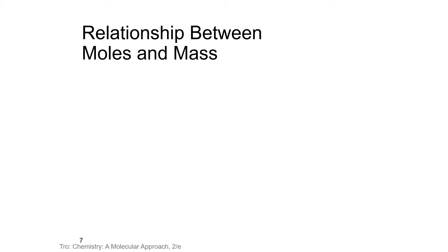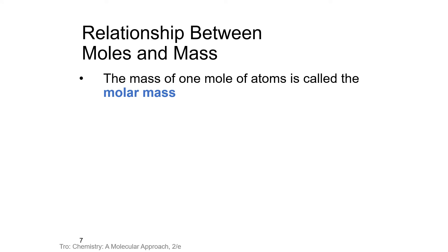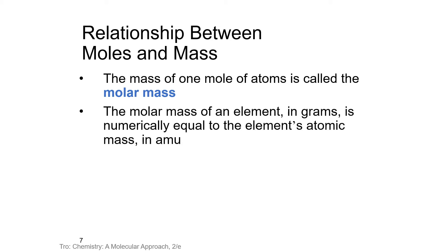When we talked about mass on the periodic table before, we called it the atomic mass — the mass of one atom. When we're talking about moles, we call it the molar mass — the mass of one mole. It is equal in grams to the element's atomic mass in AMUs, so that number on the periodic table remains the same whether we're talking about grams or AMUs.